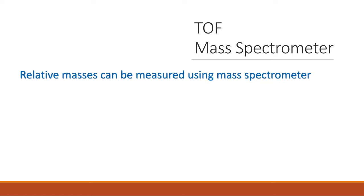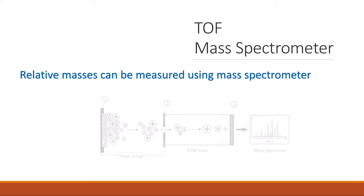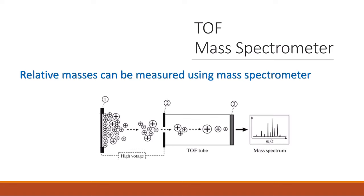The time-of-flight mass spectrometer is an instrument that can be used to measure the relative masses of atoms and molecules. There are four stages that we can see in the time-of-flight mass spectrometer, which can be represented in the diagram shown here.